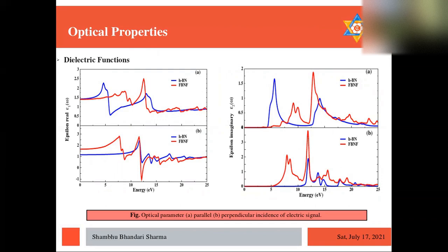And we can see there is a significant increment in the static dielectric constant for the fluorinated structure, especially for different incidence. The parallel and perpendicular denotes the incidence of optical signal parallel and perpendicular respectively.